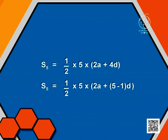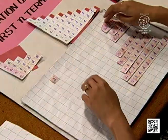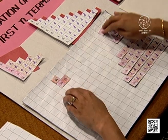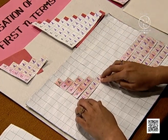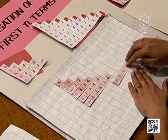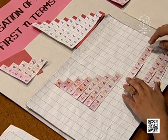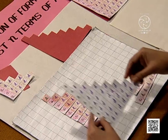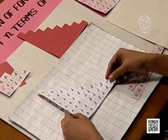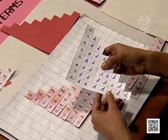Dear friends, note down this observation. Now we will be making the representation for the first 8 terms of the AP. We will be taking first term A, then A plus D, A plus 2D, A plus 3D, A plus 4D, A plus 5D, A plus 6D, and A plus 7D. Now this piece is representing the sum of first 8 terms.